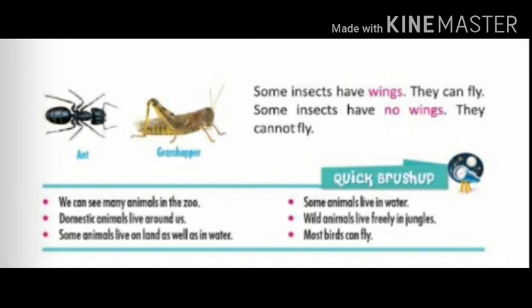Some insects have wings, like dragonfly, honey bee, and butterfly — these can fly. Some insects don't have wings, so they cannot fly. Just like some birds with wings can fly, insects with wings can fly too. Insects without wings, like ant and grasshopper, cannot fly — they can only walk on the ground.